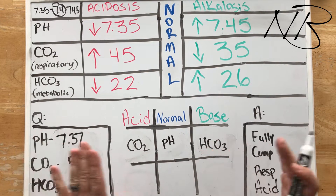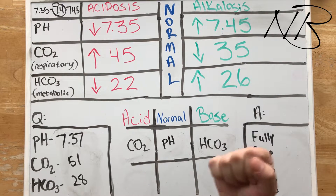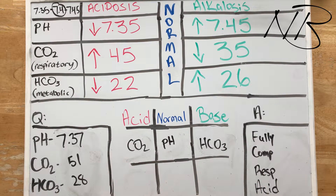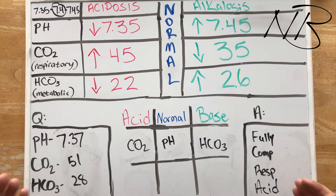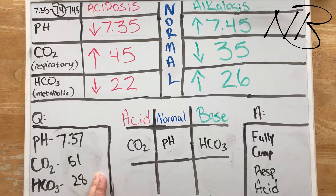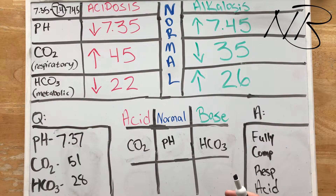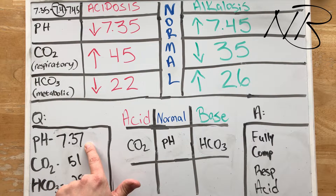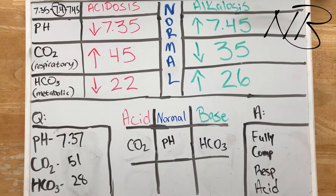As opposed to the last video where we were talking about partial compensations — where the body was trying, with similar altered CO2 and bicarbonate levels, but just failing to compensate — in these situations, although both numbers are altered and abnormal, the body is successfully compensating for that pH. That patient came in with COPD and was retaining all that CO2; the body is now successfully able to compensate and bring that blood pH back up to a homeostatic range. So in this case, we are fully compensated.